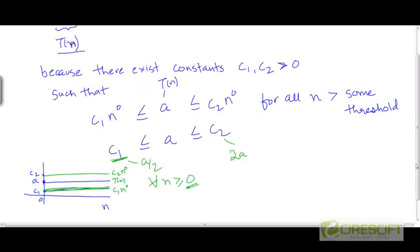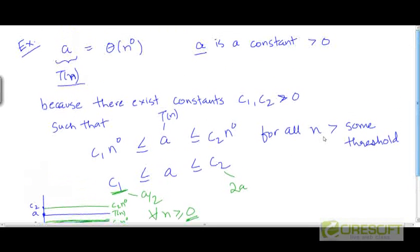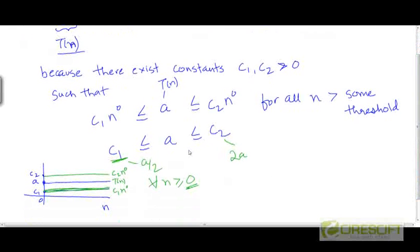So this proves that T is theta of n to the power 0 because we have satisfied the definition of theta notation here. We have determined values of these constants c1 and c2 and we have argued that there does exist a threshold beyond which T can be sandwiched between these two constant multiples of n to the power 0.